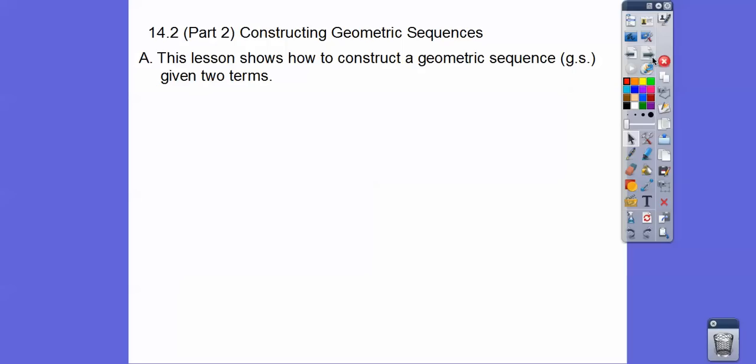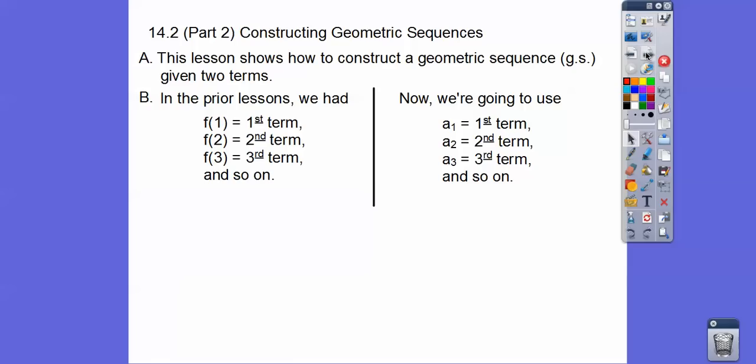This lesson shows us how to construct a geometric sequence given a couple of terms in the sequence. So in the prior lesson, we did f of 1 as our first term, f of 2 as our second term, and so on, f of 3 being our third term. Here, we're going to use subscripts.